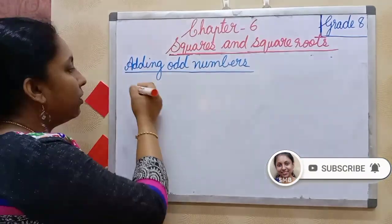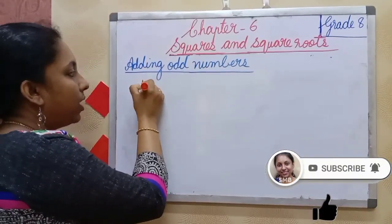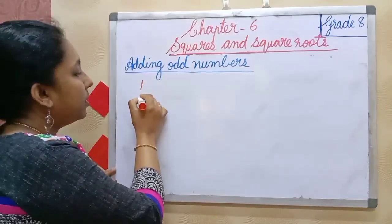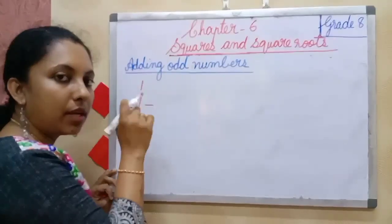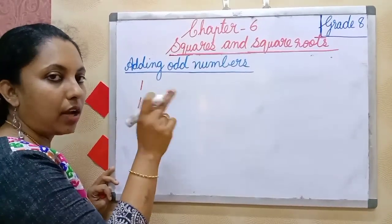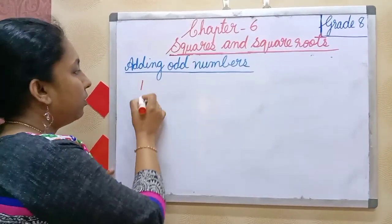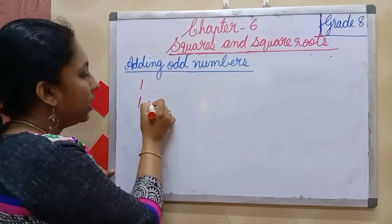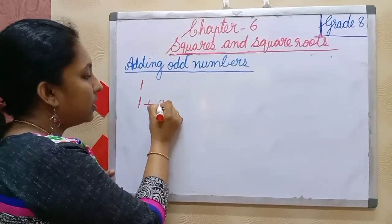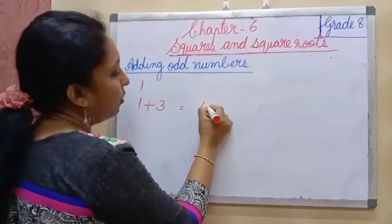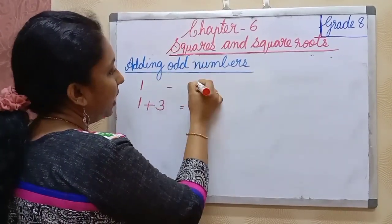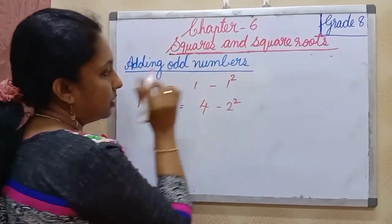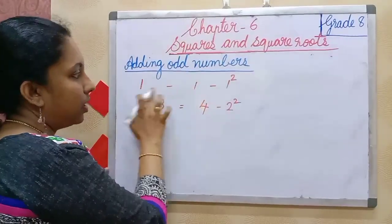As you all know, the first odd number is 1. The next odd numbers are 1, 3, 5, and so on. The first odd number is 1, which is 1 square. The sum of two odd numbers: 1 plus 3 is 4, and we can write 4 as 2 square.